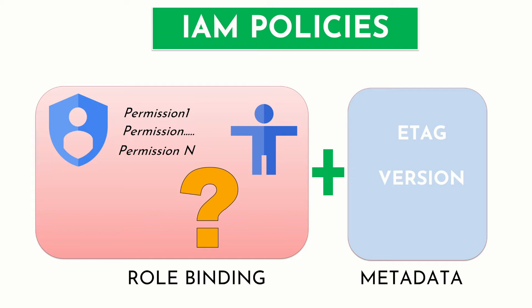An important part to remember is that a policy applied at the parent level is inherited from top to bottom. For example, if you want to grant a principal access to all projects in an organization, you apply the policy at the organization level and all projects inside that organization will inherit that policy.